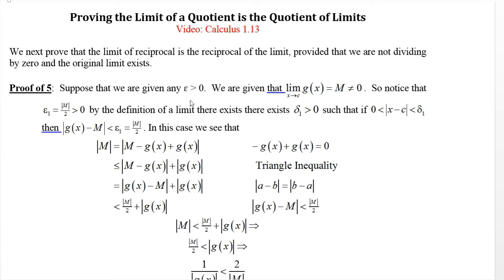Suppose we are given any epsilon greater than 0, and we're given that the limit of g(x) equals m as x approaches c, where m is not 0. Notice that epsilon_1, which is |m|/2, is a positive number. By the definition of limit, there exists a corresponding delta_1 for this epsilon_1 such that if |x - c| is between 0 and delta_1, then |g(x) - m| is less than epsilon_1, which is |m|/2.